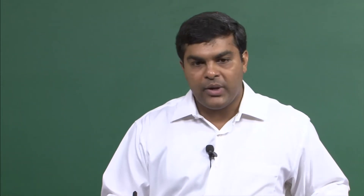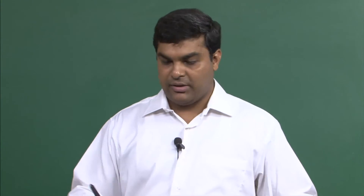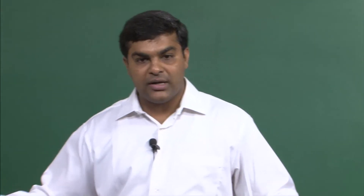Let us try to calculate the MRTS for three different cases: one when the production function is a Cobb-Douglas production function. Now you should understand that Cobb-Douglas is the name of the form, a particular form that we use. It can be used for utility, it can be used for production function.